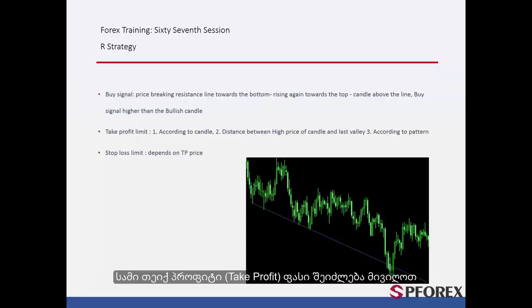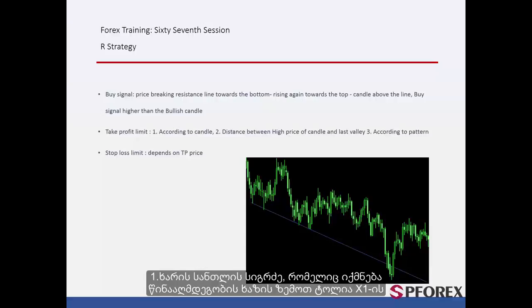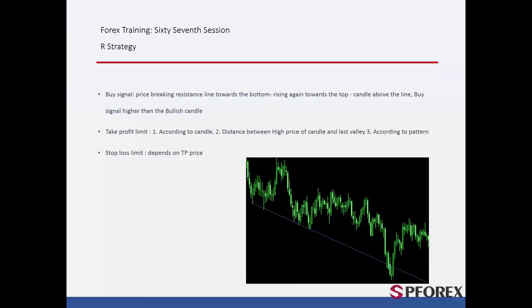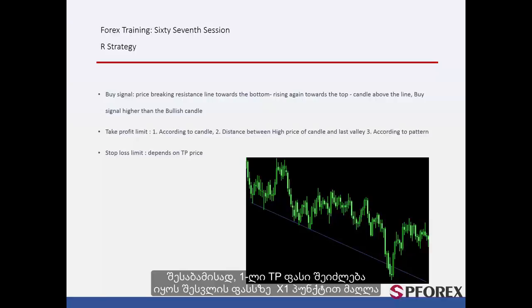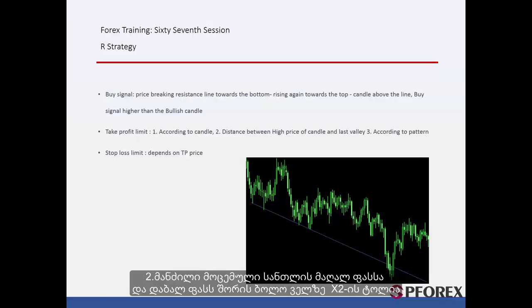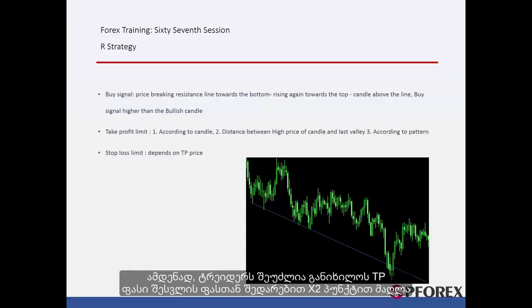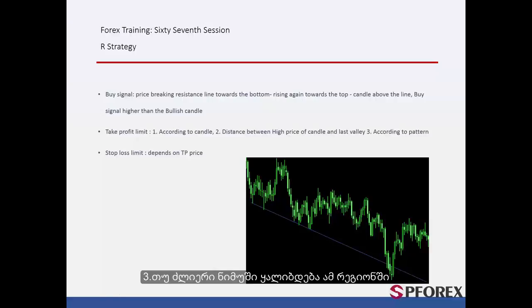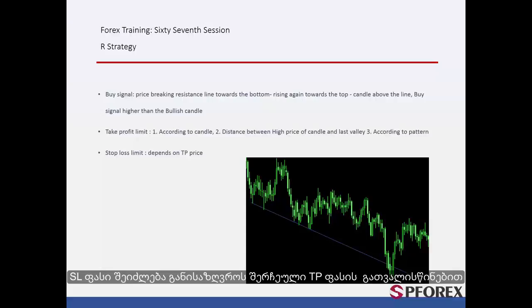Three take profit prices can be derived as follows. First, the length of the bullish candle that forms above the resistance line equals X1; the first TP price can be X1 pips higher than the entry price. Second, the distance between the high price of the given candle and the low price of the candle on the last valley equals X2; a trader can consider TP price X2 pips higher than the entry price. Third, if a powerful pattern forms in this region, a trader can consider the third TP price via this pattern. SL price can be determined considering the TP price that the trader selects.